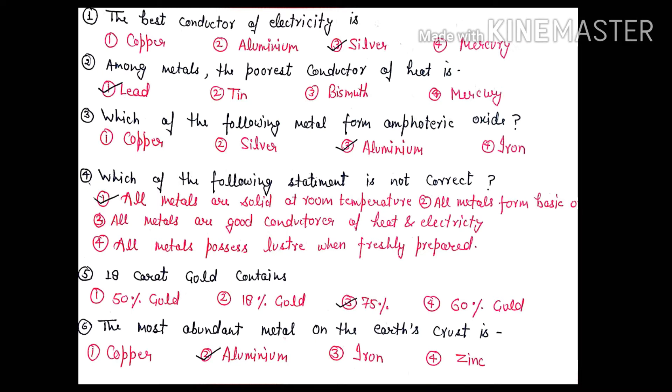Question 2: Among the metals, the poorest conductor of heat is lead, tin, bismuth, and mercury. The right option is lead, option 1. Question 3: Which of the following metals form amphoteric oxide?